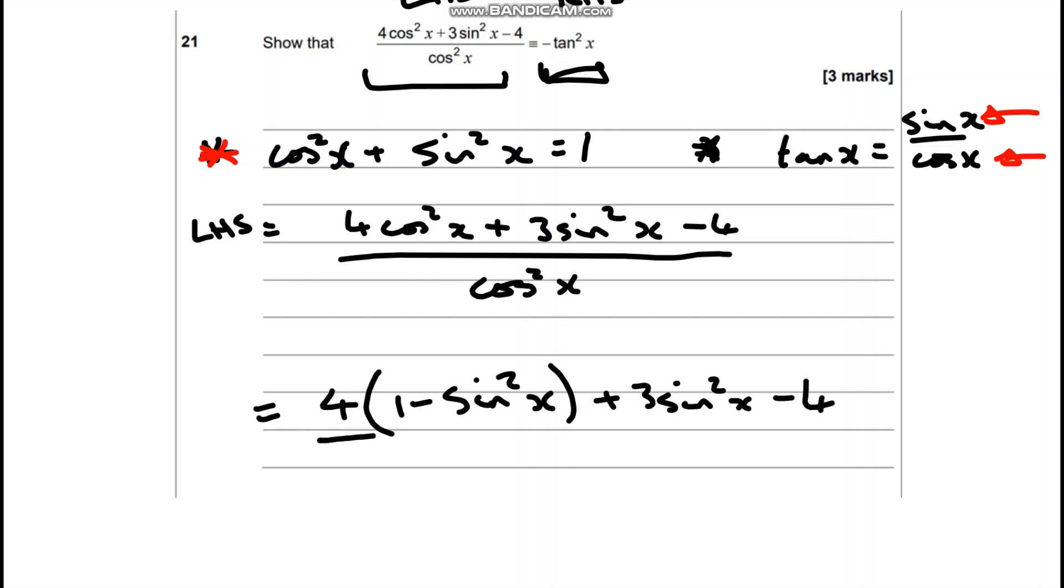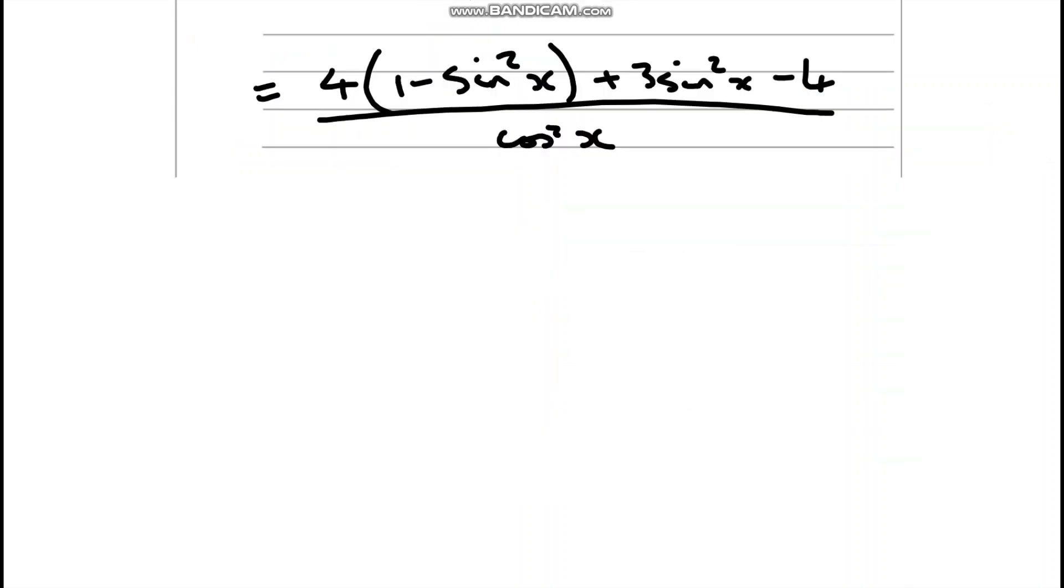Now I've still got all the rest of the rubbish there. So I'm going to expand that bracket so we're going to have 4 take away 4 lots of sine squared x plus 3 lots of sine squared x, take away 4 all over cos squared x.